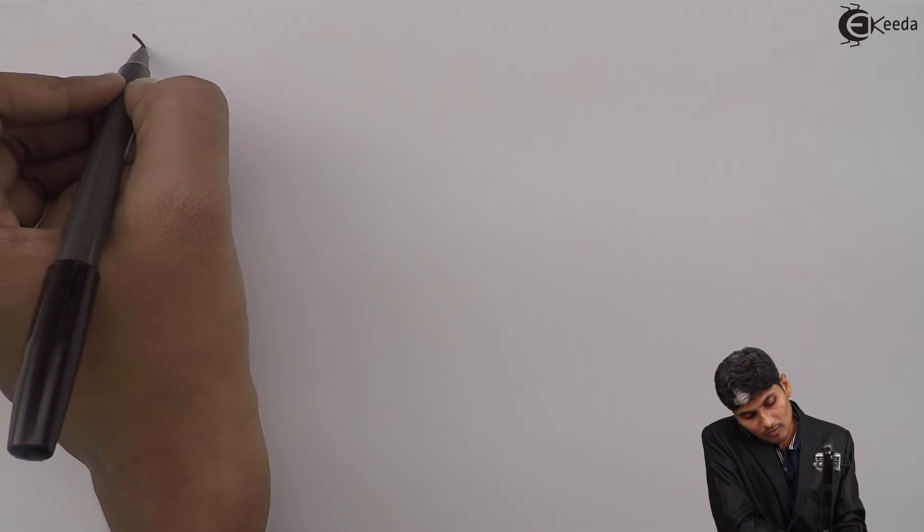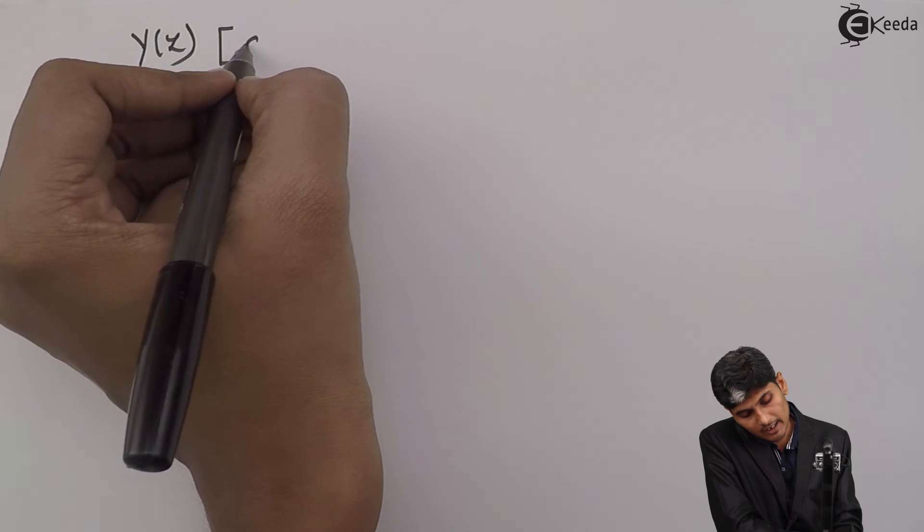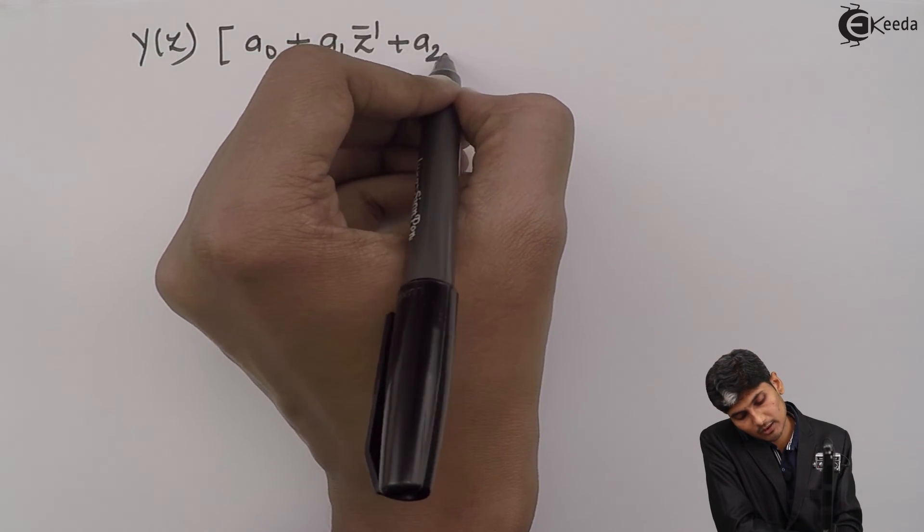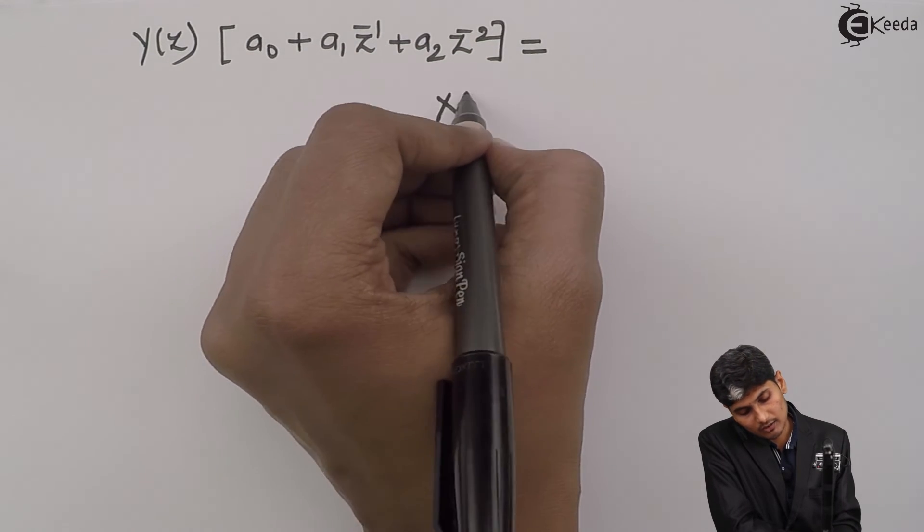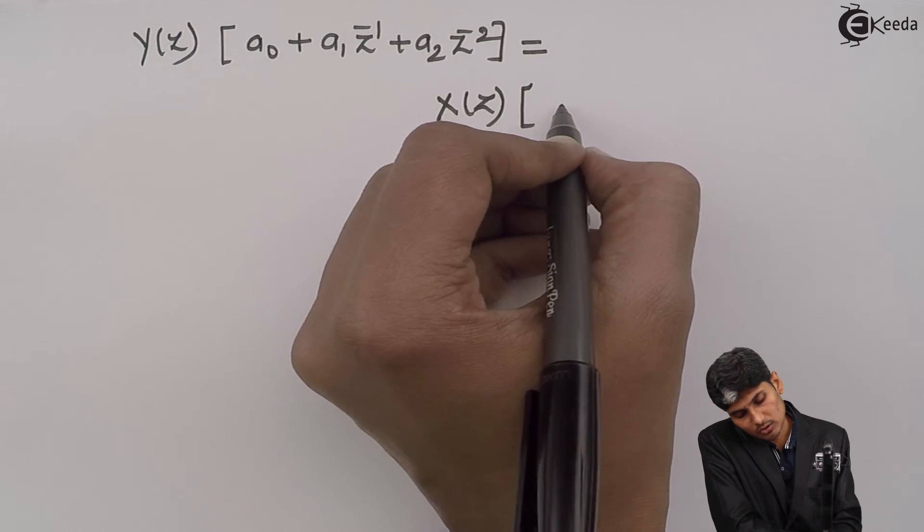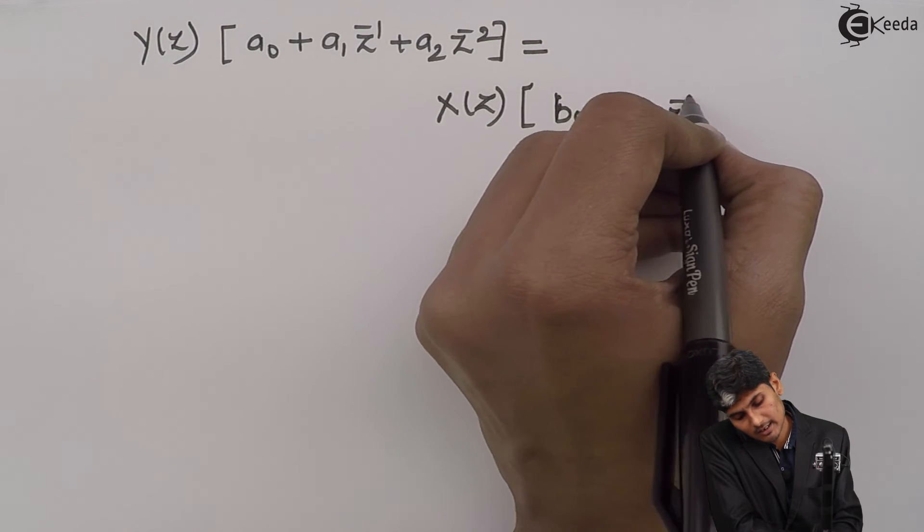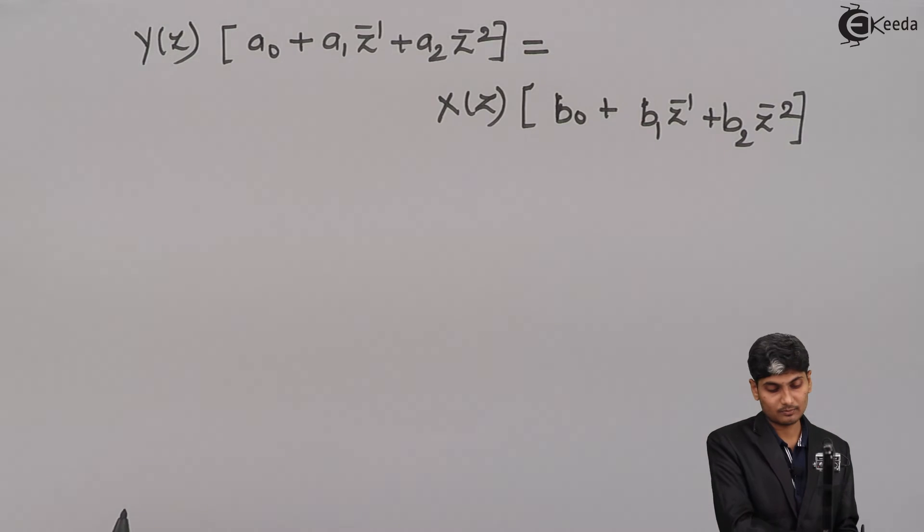Using this, I got a new equation. I pull out Y(z) out of the equation and I get Y(z)[a_0 plus a_1 z inverse plus a_2 z raised to minus 2] equals to X(z)[b_0 plus b_1 z raised to minus 1 plus b_2 z raised to minus 2].